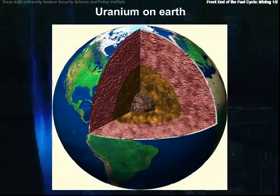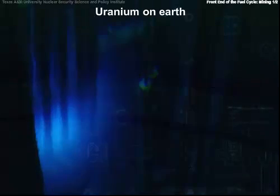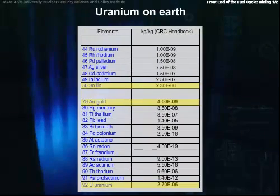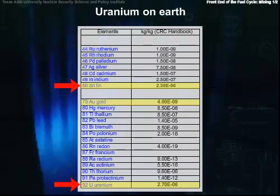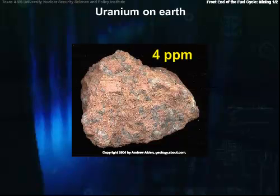As we've seen, uranium occurs throughout the Earth's crust, being about 500 times more abundant than gold, and about as common as tin. It is present in most rocks and soils, as well as in rivers and in the sea. It's found at about 4 parts per million in granite, and since granite makes up 60% of the Earth's crust, you can see that it's everywhere.